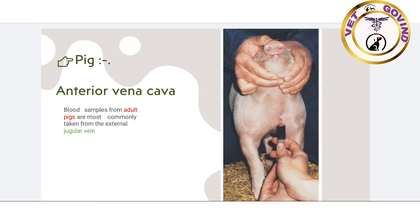However, in some books, blood samples from adult pigs are most commonly taken from the external jugular vein.